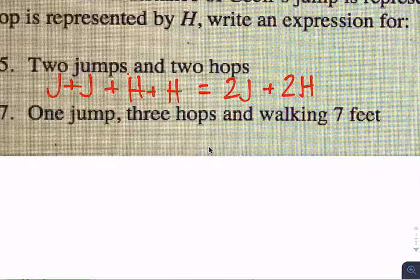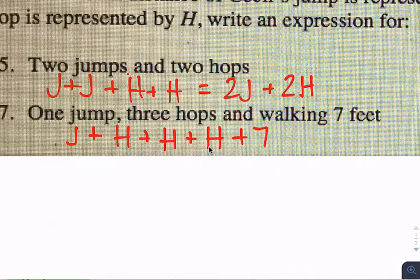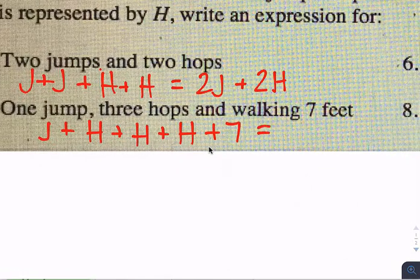The next one. One jump, three hops, and walking seven feet. One jump is J. Three hops would be H plus H plus H. And walking seven feet would be plus seven. Which would also be, if we combine all those H's, we still have one J, we have three H's, and we have a seven.